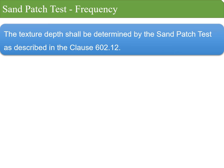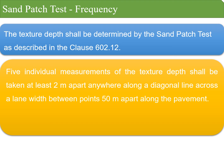The texture depth shall be determined by the sand patch test as described in Clause 602.12 of MORTH, that is the Ministry of Road, Transport and Highways. Five individual measurements of texture depth shall be taken at least two meters apart, anywhere along a diagonal line across the lane width, between points 50 meters apart along the pavement.